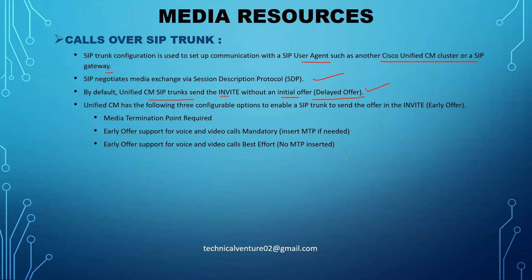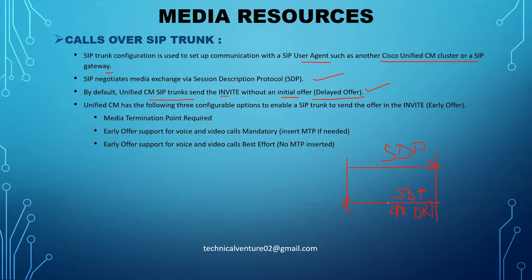If the phone is sending its SDP messages in the first invite, that is your early offer. If it is not sending the SDP in the first invite and phone B sends the SDP messages in the 200 OK, that means it's a delayed offer. If you have no idea about these things — early offer, delayed offer, or SIP — you can check out my detailed video on session initiation protocol, which covers early offer, delayed offer, all SIP messages, SIP methods, and scenarios between two, three, and four parties.